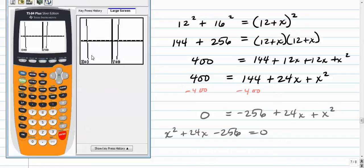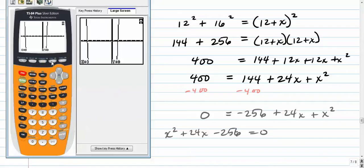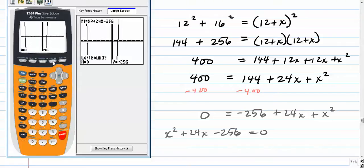A couple of different ways to calculate those. I'll show you one or two here. The first thing I'm going to do is press second, trace, which is going to give me this menu. And then I'm going to go to zero and press enter. It's going to ask me a couple of questions here.